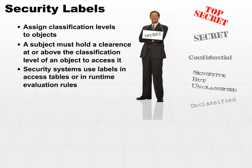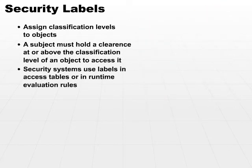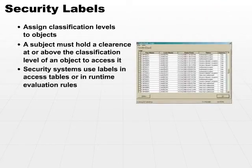Most security systems use labels in access tables or in runtime evaluation rules. They'll look up the actual security label in a table, and it may be assigned on an object-by-object basis or on a group basis. Different mechanisms use different strategies. It is also possible to use runtime rules, so that at runtime you would do a lookup — perhaps out of a database — or evaluate based on the content of a particular document. Content may dictate which sections or perhaps the whole document is set at a specific security label.